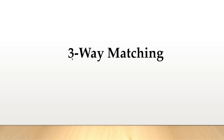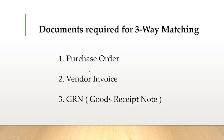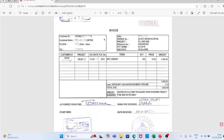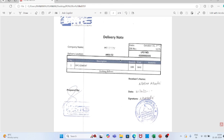Three-way matching. Documents required: purchase order, vendor invoice, and GRN (goods receipt note). The vendor delivers material to the stores along with a delivery note containing item, unit, and quantity. The storekeeper physically counts after unloading from the truck, certifies the delivery note by signing, and returns it to the vendor. The storekeeper then prepares a store's receipt note (SRN). The warehouse team prepares the GRN based on the SRN and a copy of the vendor's delivery note, and submits the GRN along with the purchase order to the accounts payable team.